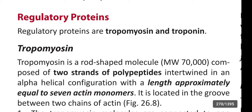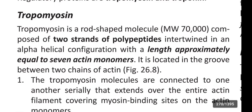In this video we are going to learn about the regulatory proteins. The regulatory proteins are tropomyosin and troponin. First, tropomyosin is a rod-shaped molecule with molecular weight 70,000, composite of two strands of polypeptides intertwined in an alpha helical configuration, with a length approximately equal to seven actin monomers. It is located in the groove between the two chains of actin.